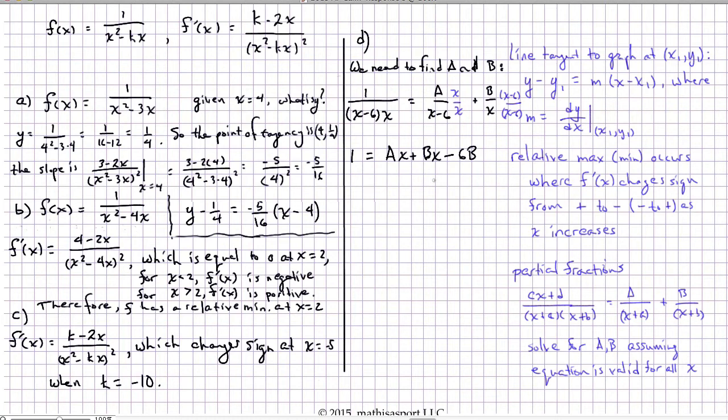Now, this has to hold for all values of x. So the only way that can be the case is if, because there is no x on this side, we have to have that a plus b times x equals 0. Otherwise, a changing value of x would change the state of the equation. And we also have that negative 6b equals 1. So from that we immediately have that b equals negative 1 sixth, and because a plus b is 0, a and b are opposites of each other and so a equals one sixth.